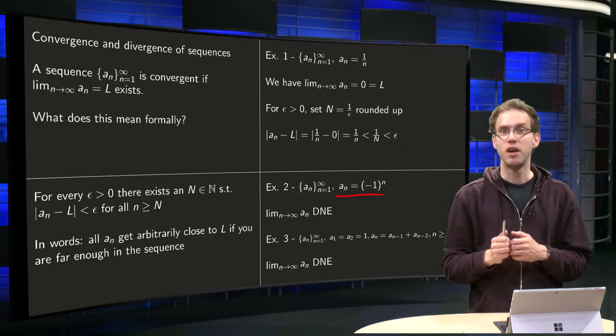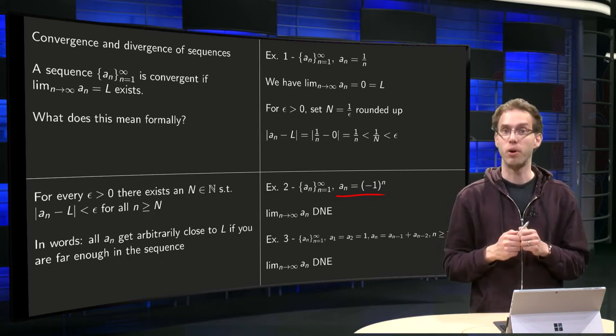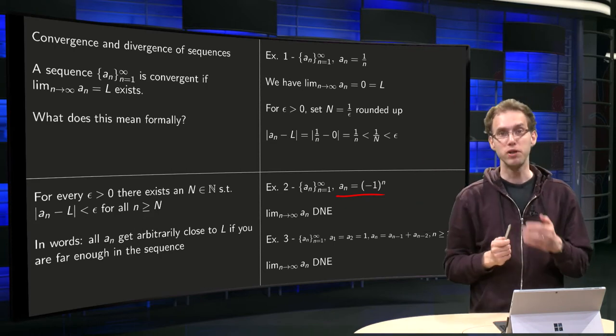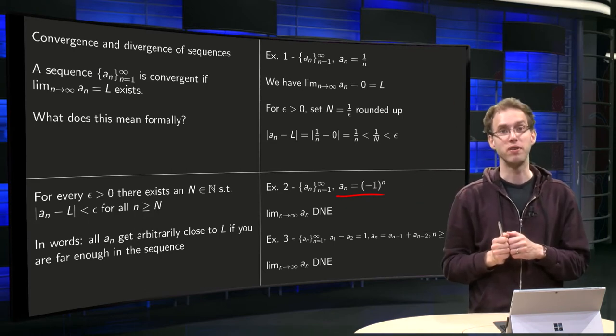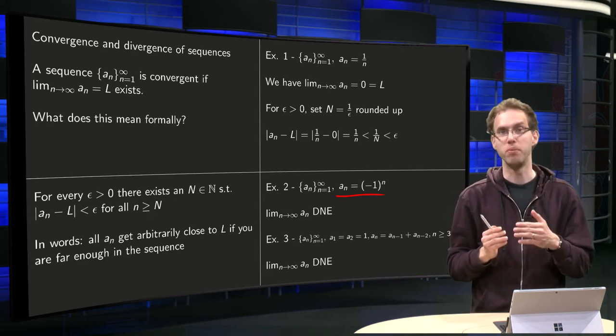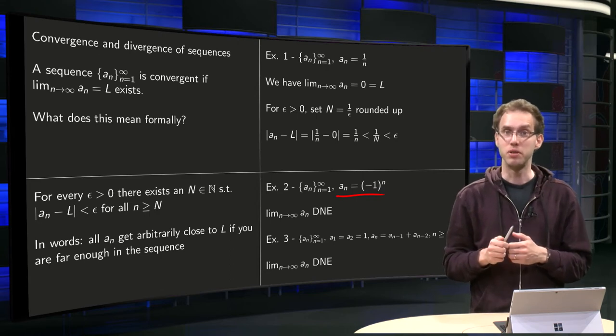The sequence is bounded in the sense that the elements will not go away to infinity, but you keep jumping from plus 1 to minus 1, so we will never approach a number L in the limit. So that means this limit does not exist.